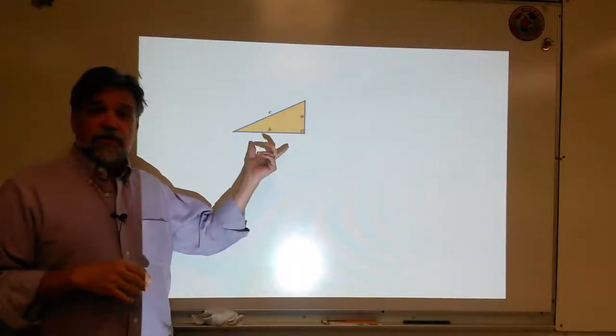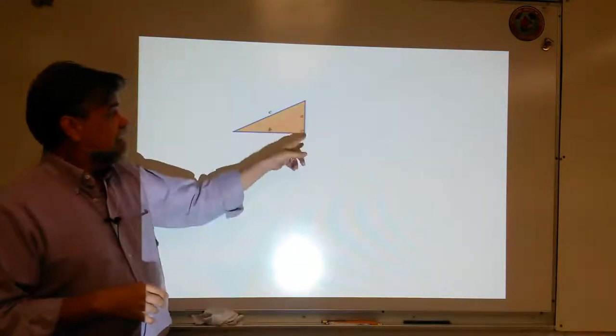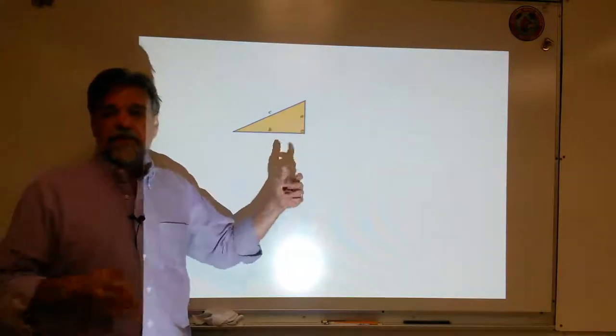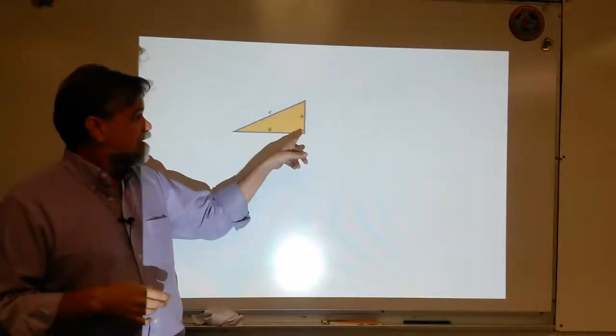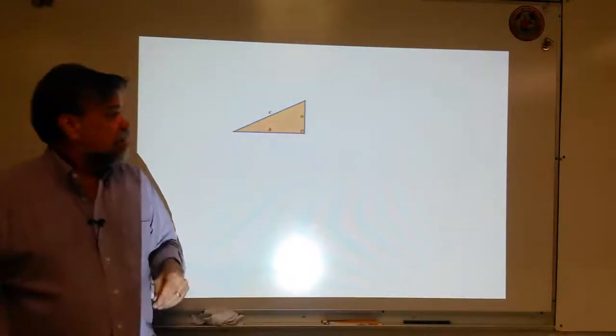So, here we start with our right triangle. Here's A, here's B, here's C. You can flip around the A and the B. It doesn't matter. It's arbitrarily named. But I just call the short side A. And then we've got our right angle right there.